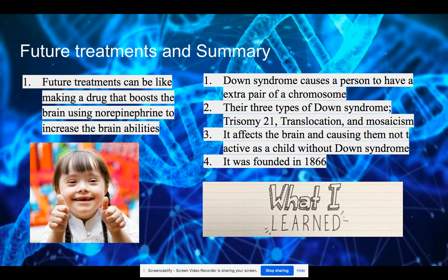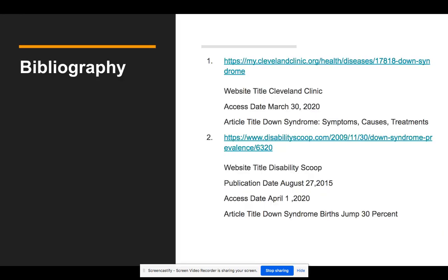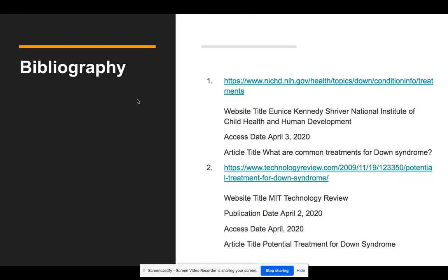So, my summary — what I've learned. The main thing I learned is that Down syndrome causes a person to have an extra pair of chromosomes. There are three types of Down syndrome: Trisomy 21, Translocation, and Mosaicism, and Trisomy 21 is the most common. I learned that it affects the brain and causes them not to act like a child without Down syndrome. And I was surprised that it was founded in 1866. That's all — the rest is the bibliography and where I found my sources. Thank you.